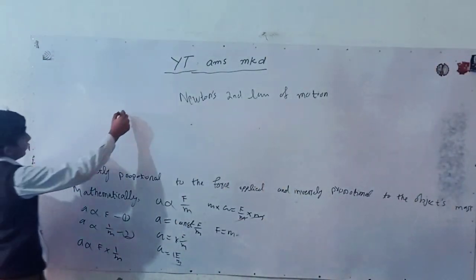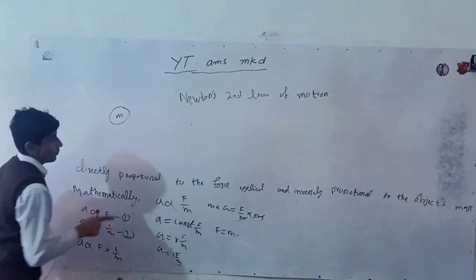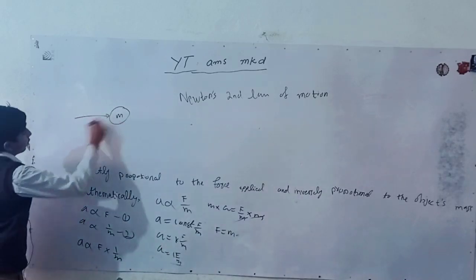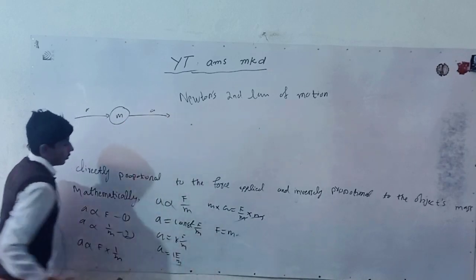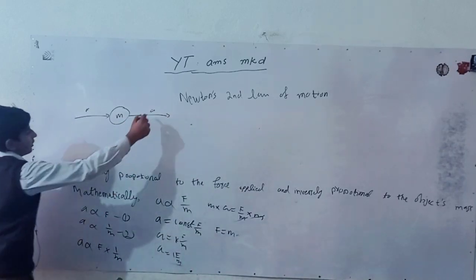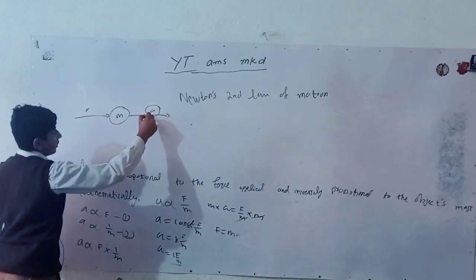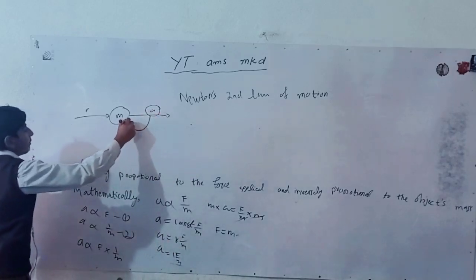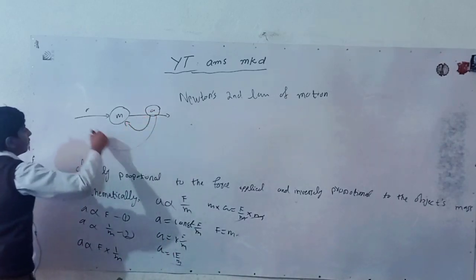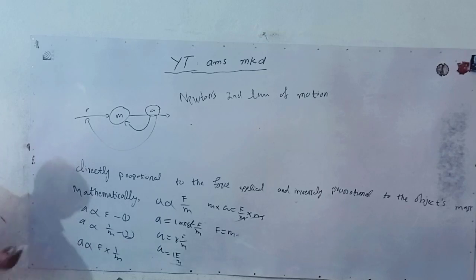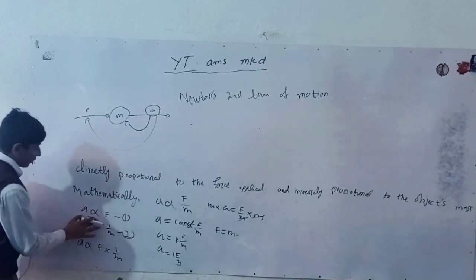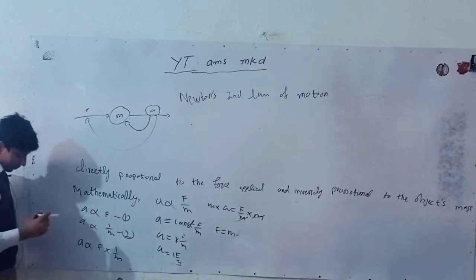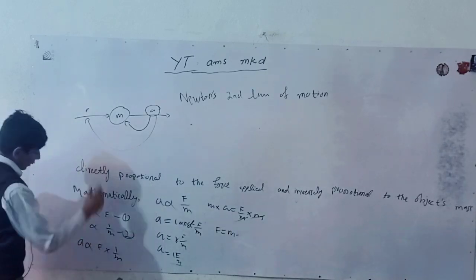So if there is an object having a mass M, and if we apply force on it (this is F), it will produce some acceleration in that body. So we have to check the relationship of this acceleration with the mass of this body and with the force applied. The force applied and acceleration have a direct relation, meaning if the force is increased, there will be increase in acceleration.